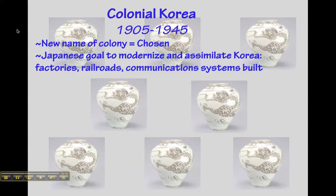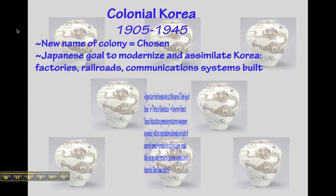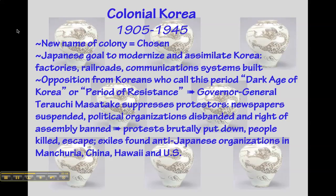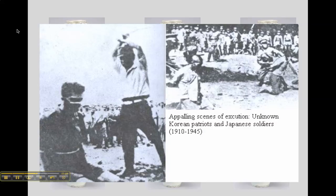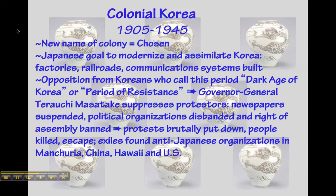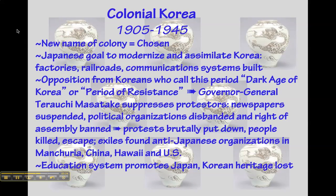The name of Korea when it is a colony of Japan is called Chosun. The Japanese do exactly what we saw the Europeans do elsewhere as they are taking over places — they are modernizing and trying to force Japanese culture onto the Koreans. Koreans refer to this period as the Dark Age or the period of resistance. The infamous Governor General Tarachi Masataki was known for suppressing protesters in a very brutal way. People were killed, and those who escaped often went on to found anti-Japanese organizations in places including Hawaii and the United States.